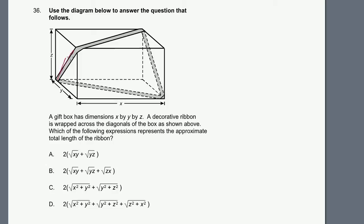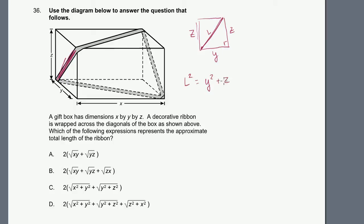What is this length right here? If we draw that side of the box, the height is z and the depth is y. The ribbon goes from the bottom left to the top right. We can use the Pythagorean theorem because this is a right triangle. The length squared is equal to y squared plus z squared, or the length is equal to the square root of y squared plus z squared. That's this length right here.